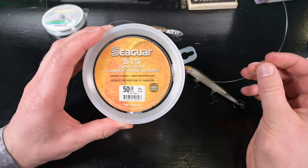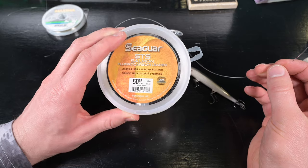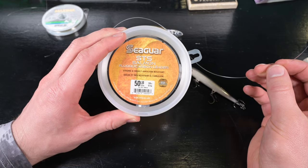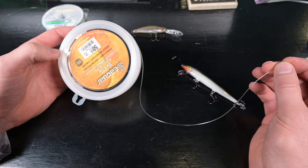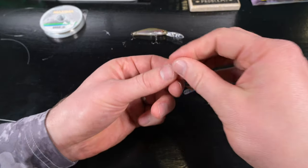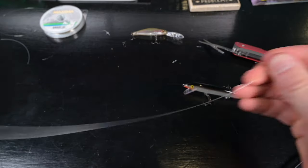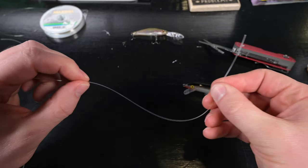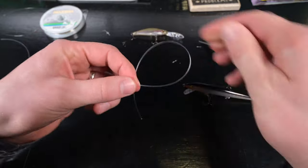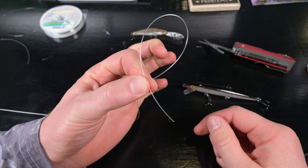For demonstration purposes, I'm going to use 50 pound fluorocarbon, which is way overkill for these small Rapalas, but it will definitely help you learn the knot a lot better. First, we take the bitter end, wrap it behind the standing end, and pinch our thumb and index finger together to make a loop.